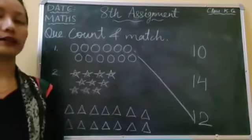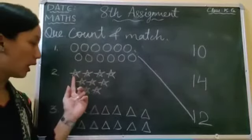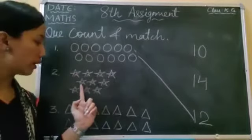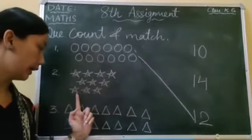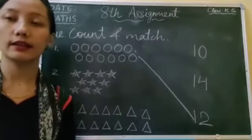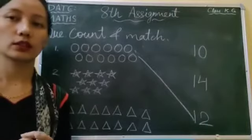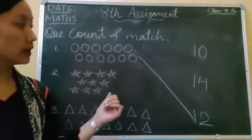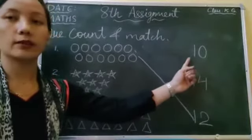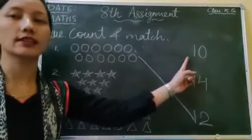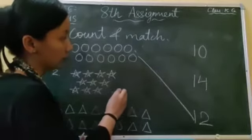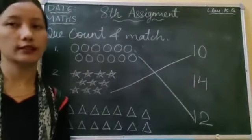Now next we have stars. Let's count: one, two, three, four, five, six, seven, eight, nine, ten. How many stars are there? There are ten stars. Is this number ten? Yes, this is number ten. So let's match these stars to number ten.